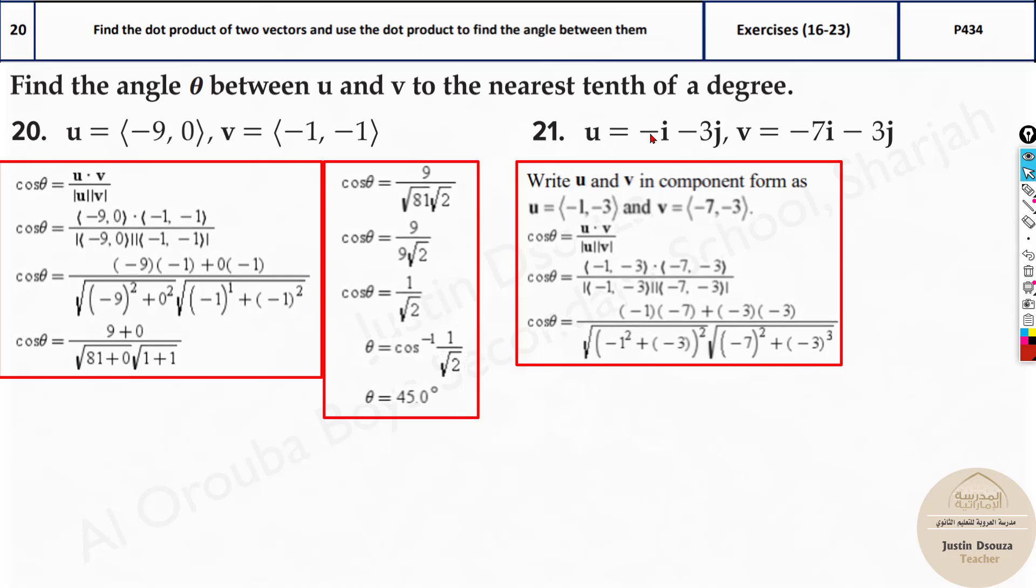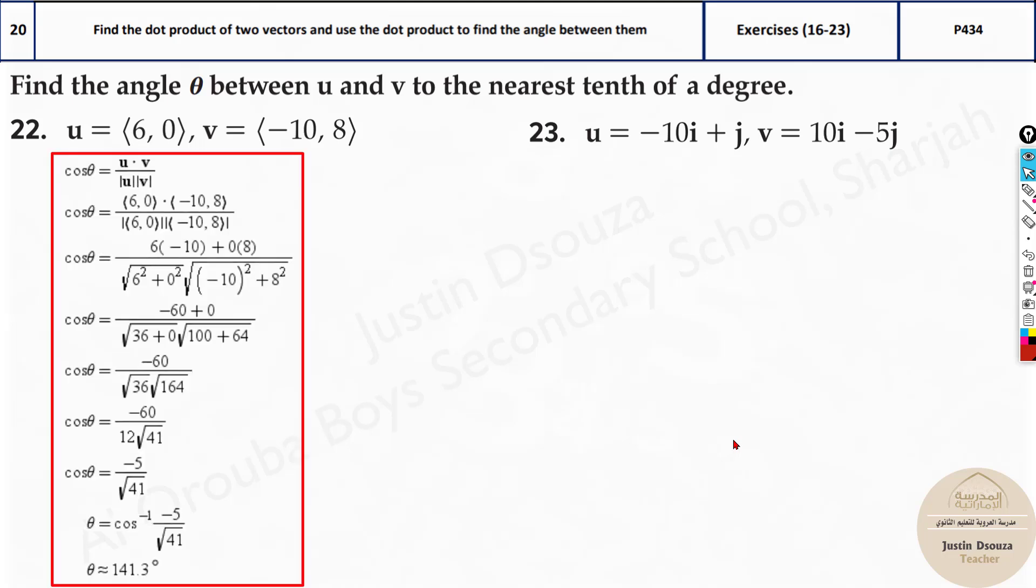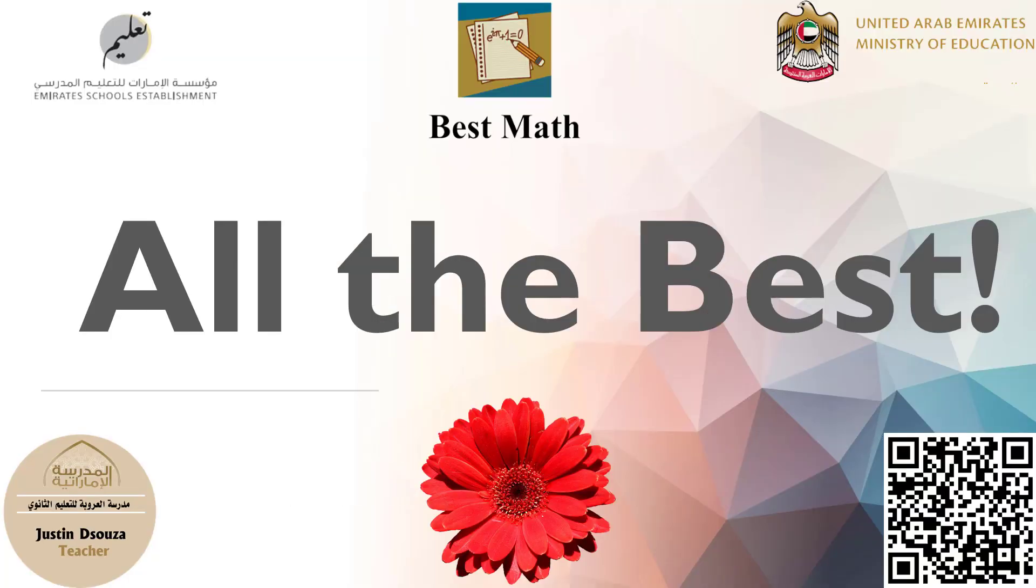If it is not given in the component form, please get it in the component form and then solve it up. One of the easiest type of problems. All are pretty straightforward. And there we have reached the end of the writing part of the EOT.